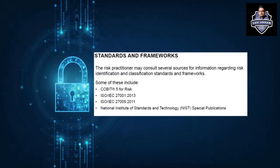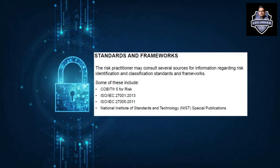When talking about controls, we also need to address standards and frameworks. Different standards and frameworks exist for risk management. You have COBIT for risk, ISO 27001, ISO 27005, and NIST Special Publication 800-53. You can use any of these standards for risk identification, risk classification, risk management, and risk assessment. If asked in an interview, you can reference all four or provide in-depth detail on any one of them.